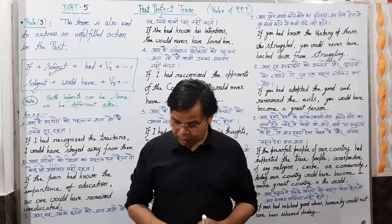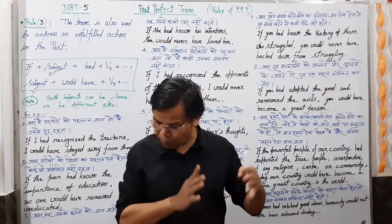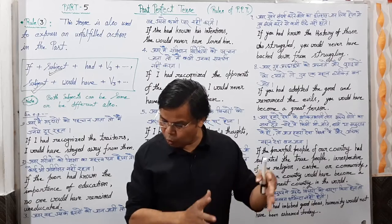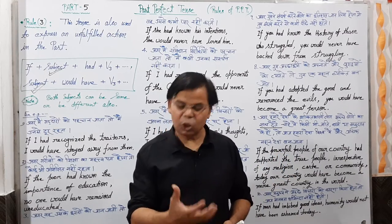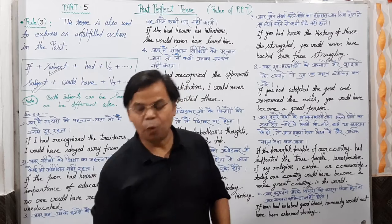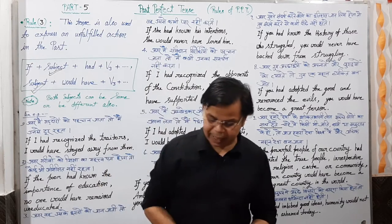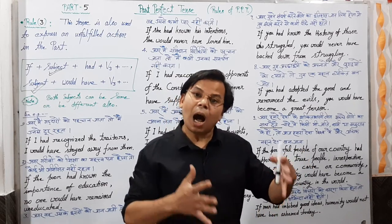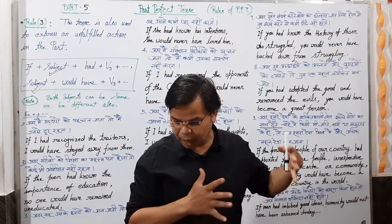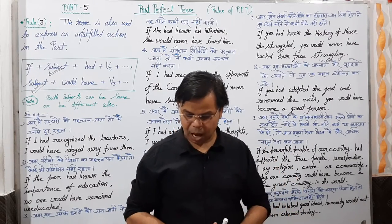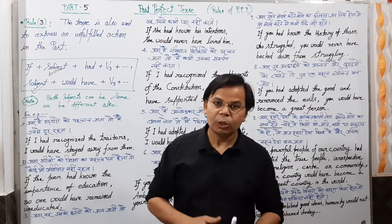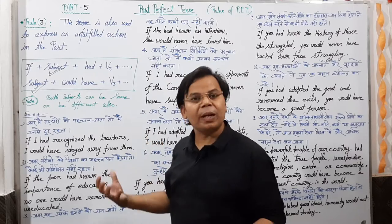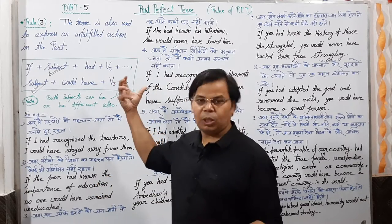Fourth sentence: अगर अस्मत ने मुझे कोई उपहार दिया होता, तो मैं उसे स्वीकार कर लेता। Fifth sentence: अगर मुझे अपने समाज का इतिहास पता होता, तो मैं अपने जीवन में सफल होता। इन sentences की practice कीजिए और English में translate कीजिए rule number three के according।